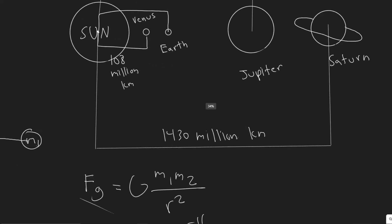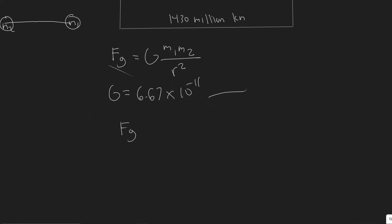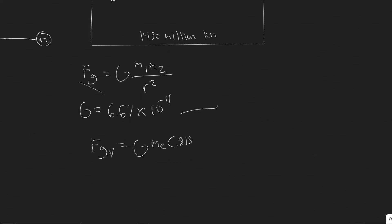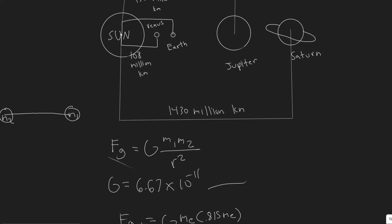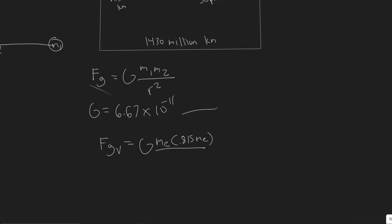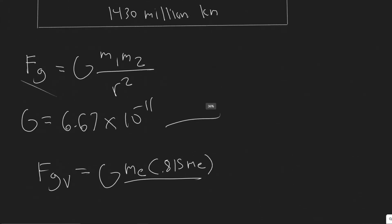Let's start with the force due to gravity on Earth from Venus — call it FGV. It equals G·Me·Mv, where the mass of Venus is 0.815 Me. Then we divide by their distance squared. The Earth is 150 million kilometers from the sun, and Venus is 108 million kilometers away, so the distance between them is 150 − 108 = 42 million kilometers.